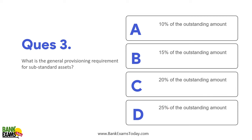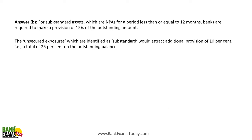Question three: What is the general provisioning requirement for a substandard asset? For provisioning requirement under the IRAC norms, it is 15% for substandard assets — specifically, 15% of the outstanding amount.